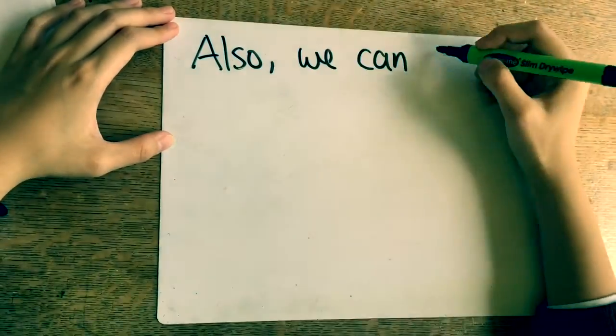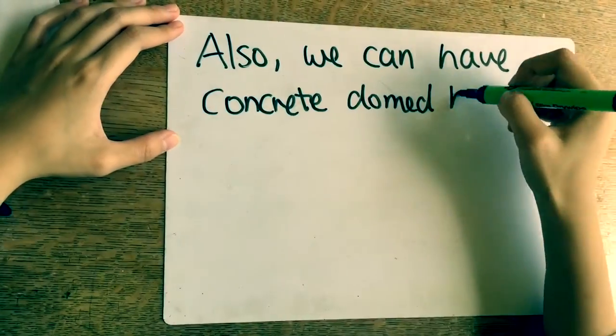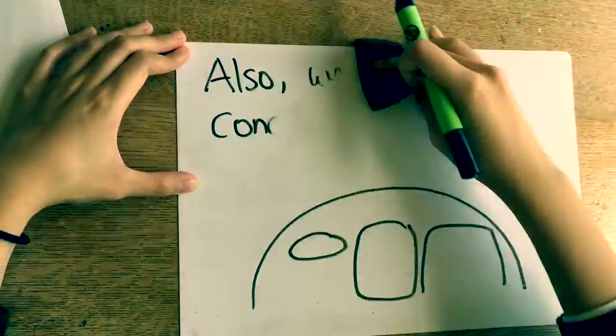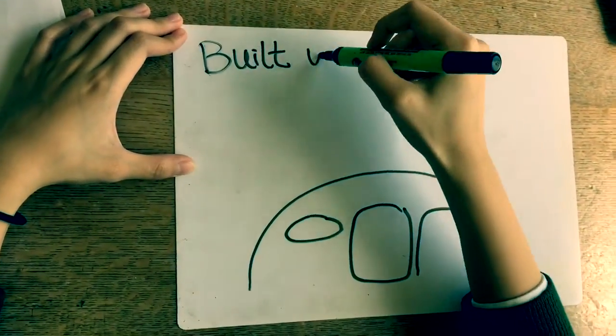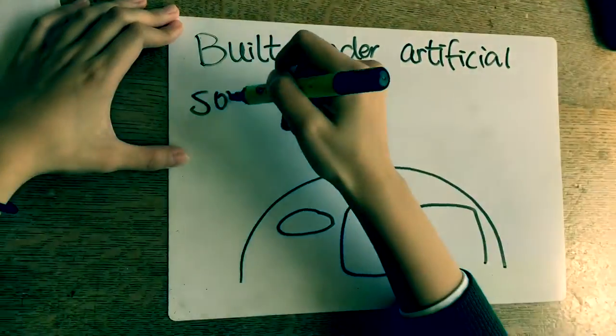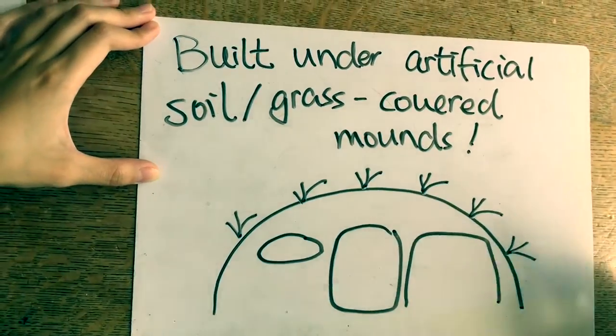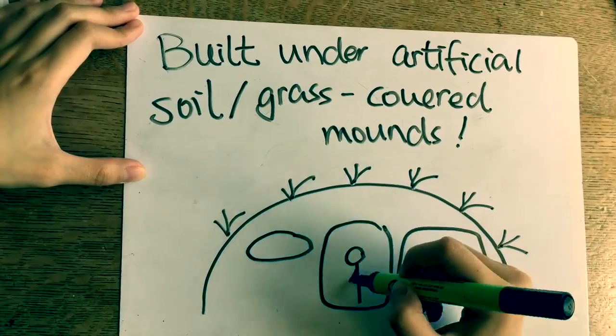Also, we can have concrete domed houses built under artificial soil or grass-covered mounds to reduce the damage caused by tornadoes.